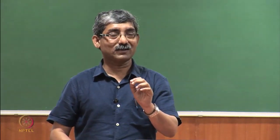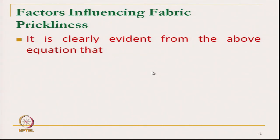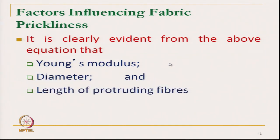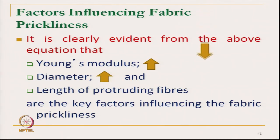The problem of prickle sensation arises when there are short protruding fibres that are coarser, with higher moment of inertia and higher Young's modulus. Using coarser wool fibre gives all these negative characteristics and ultimately produces prickle sensation. If we know all these characteristics, we can design a cloth without prickle sensation. Prickliness of fabric is related to Young's modulus, diameter of fibre, and length of protruding fibre — these are the key factors.